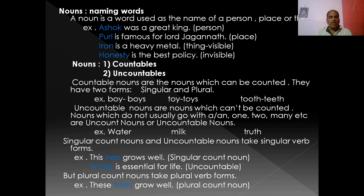Countable nouns are the nouns which can be counted and they have two forms, singular and plural. For example: boy/boys, toy/toys, tooth/teeth, man/men, girl/girls — like this.